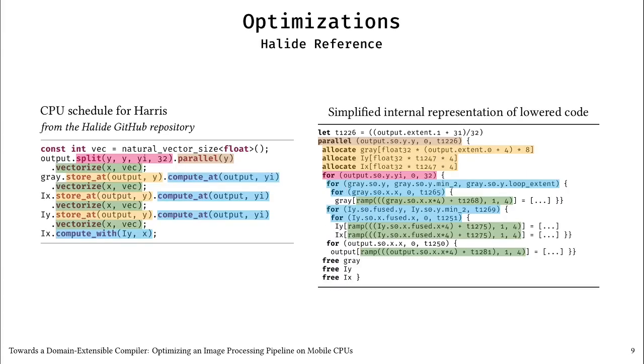Now that we can represent the Harris operator, we can start optimizing it. On the left of this slide, you can see the optimized Halide CPU schedule that we use as our reference. This schedule is taken from the official Halide GitHub repository. We highlight the effect of the schedule on the Harris internal representation of the lowered code. The y-dimension is split into an outer parallel loop in brown and an inner sequential loop in pink. As highlighted in orange, grey, ix and iy are stored inside this parallel loop, but computed as required inside the sequential loop, as highlighted in blue. Finally, the x-dimension is vectorized as highlighted in green.